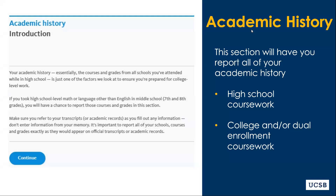Students who have attended more than one high school will be able to report this in the Academic History section of the application. Please note that the UCs do not request any transcripts with the application. Therefore, applicants are responsible for self-reporting all of the A-G coursework within this section.